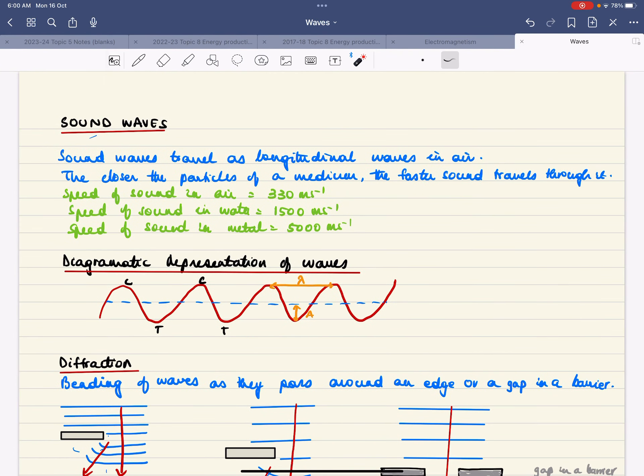Sound waves travel as longitudinal waves in air. The closer the particles of a medium are, the faster the sound travels through it. The speed of sound in air is about 330 meters per second.